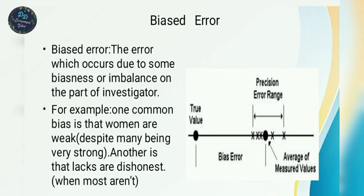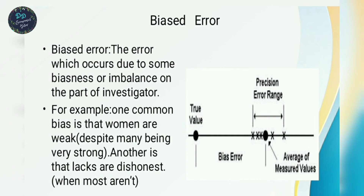Next is biased error. Biased error is the error which occurs due to some biasness or imbalance on the part of the investigator.